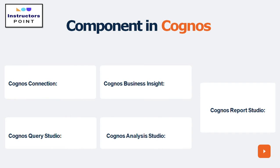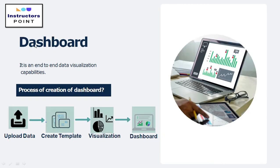Cognos Analysis Studio helps businesses find and focus on the things that are most important for taking business decisions, and based on those decisions they can enhance their business performance across various domains. Cognos Report Studio is used to provide detailed information about your dashboard. It allows you to create different charts, maps, lists, or other available reports from different data sources.